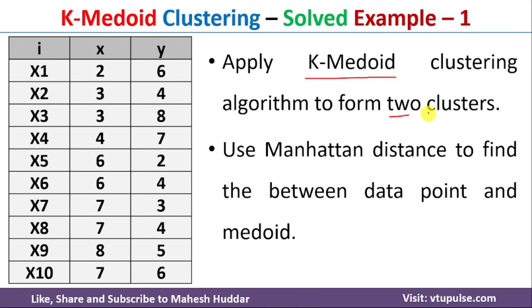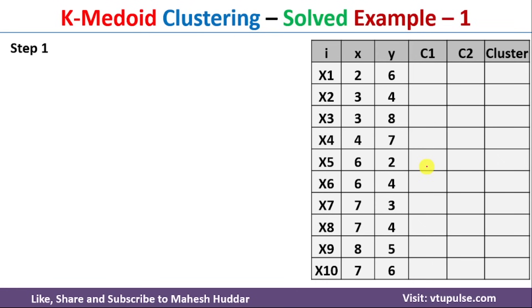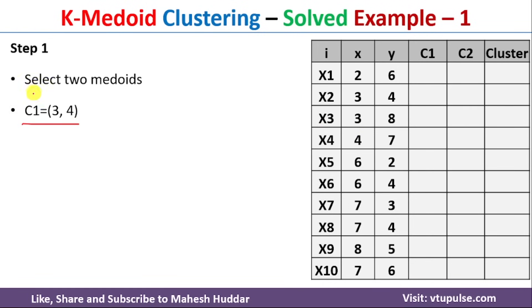To find the distance between a data point and a medoid, we use the Manhattan distance formula. The first step of the K-Medoids clustering algorithm is to select two medoids. Since we want to create two clusters, we need to select two data points as the medoids. We will select them randomly. The first data point selected is (3,4), named C1, and the second is (7,4), named C2. Both are among the given data points.